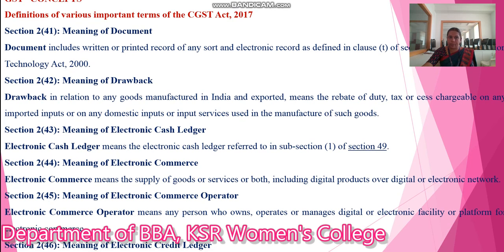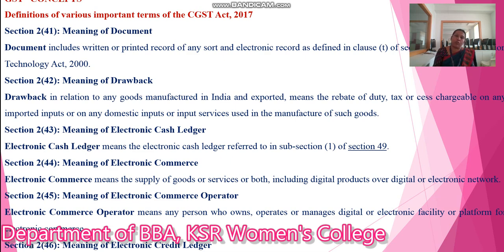Next is the GST concept — definitions of various important terms under the CGST Act 2017. The first one is Section 2, subsection 41: meaning of 'document.' Document includes a printed return, record of any sort, or electronic record as defined under Section 2, subsection 44 of the Information Technology Act, 2000.